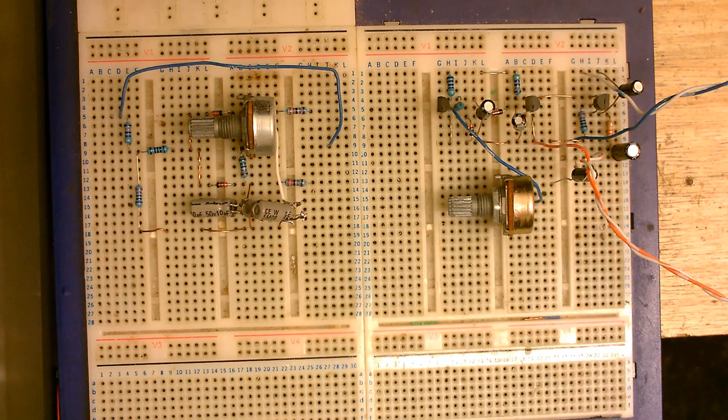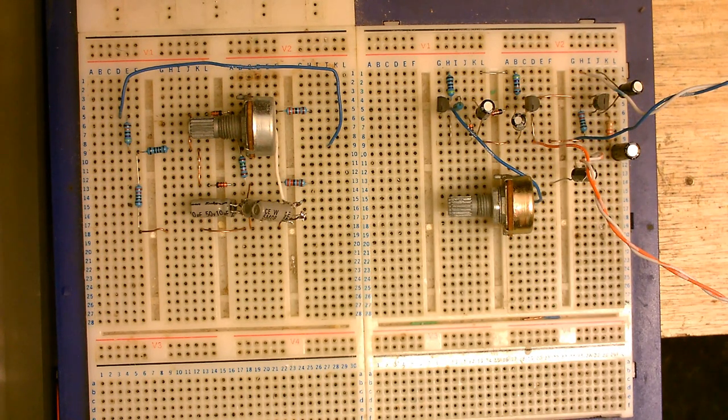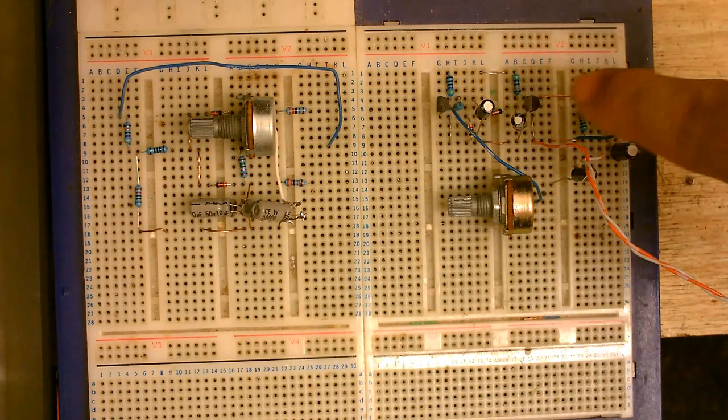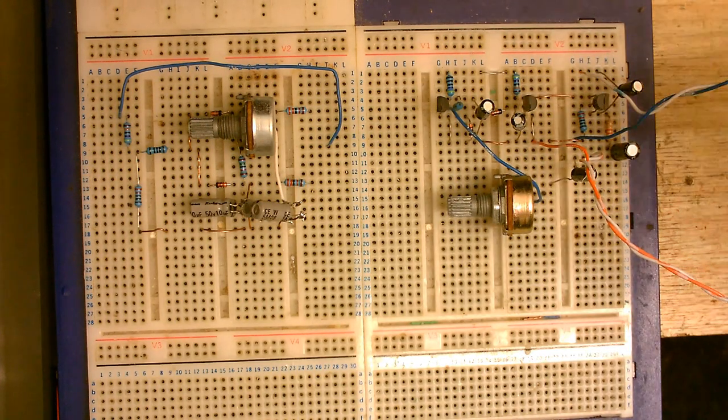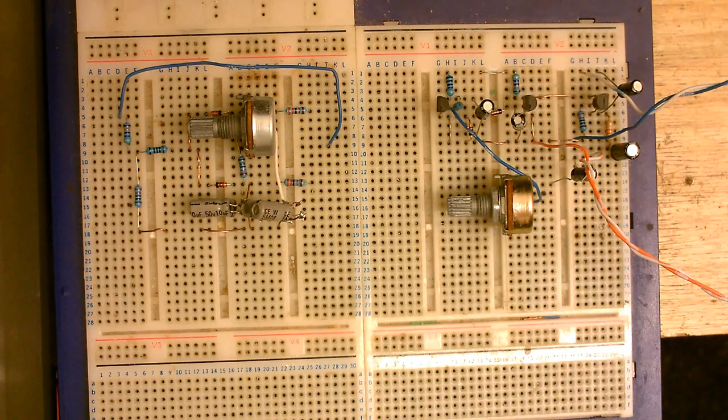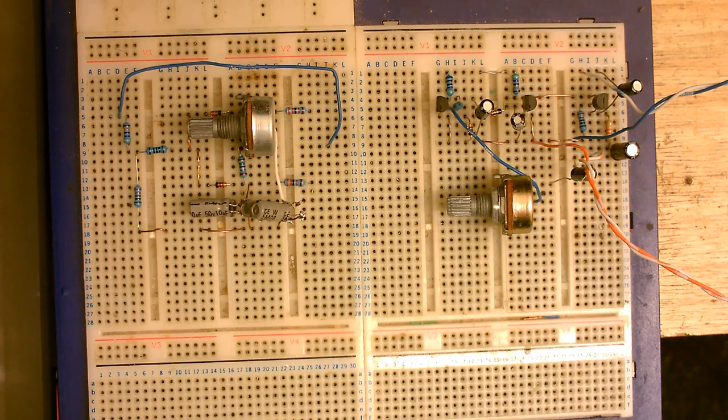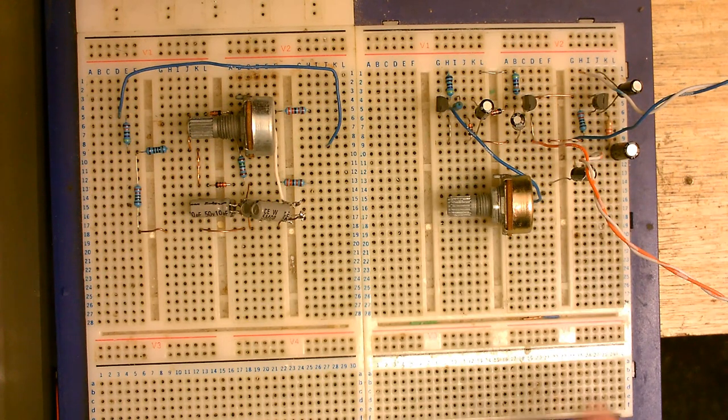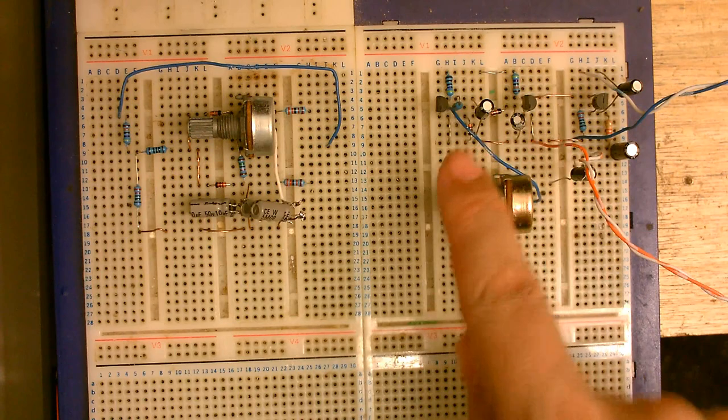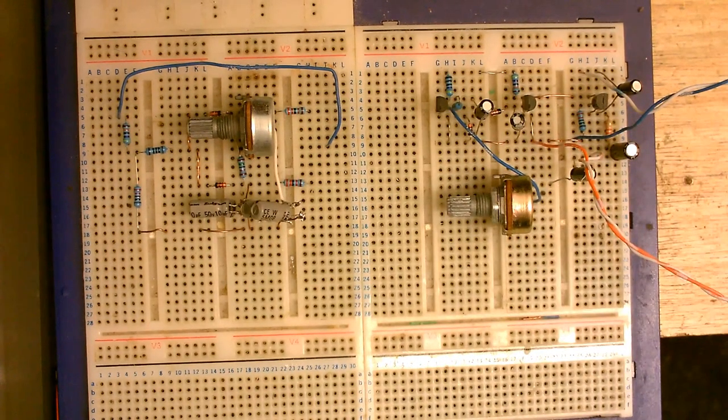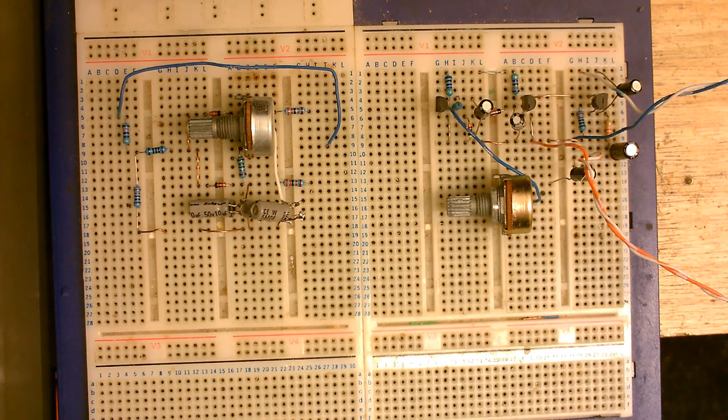So instead of using BC-109 transistors, I've used BC-547s and for the field effect transistor, I've stuck in an MPF-102. Should still work because they're all basically the same. Well, not exactly the same, but these are kind of like the same as a BC-109 and that's kind of like the same as whatever other field effect transistor was in there.